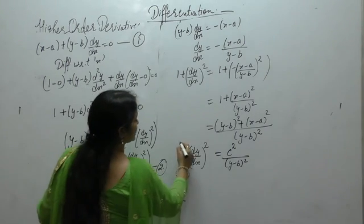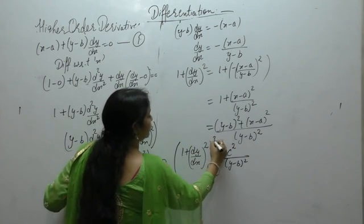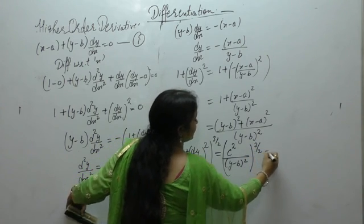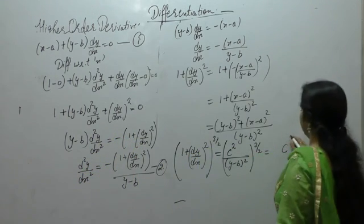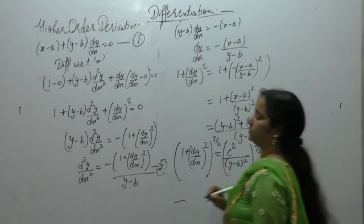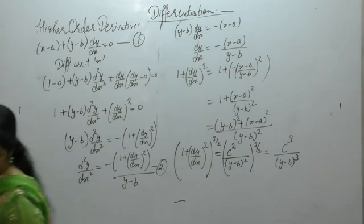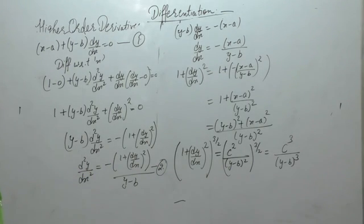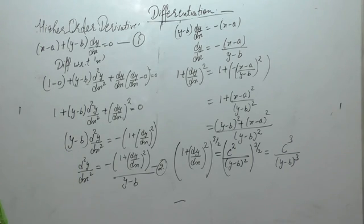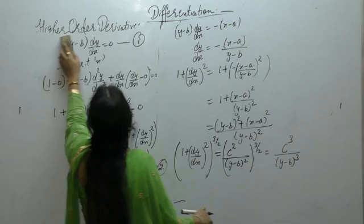Now we want this term to the power 3/2. Take power 3/2 on both sides. On the left we have [1 plus (dy/dx)²]^(3/2) and on the right we get c³ upon (y minus b)³. Now the second order derivative has this value.